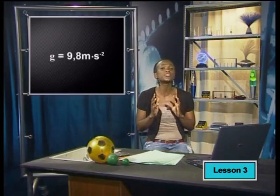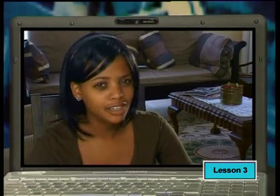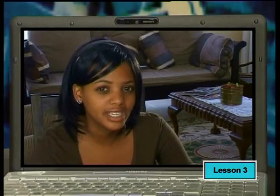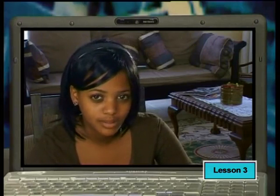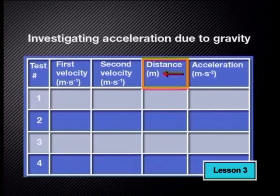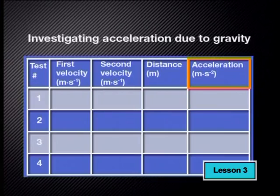First, we need to draw a table to record all our results. What information do we need to put into the table? We have to record the first and last velocities as measured by the motion detector, and the distance. Don't forget to include the units. We also include a column for the value of acceleration that we will calculate at the end of the experiment.